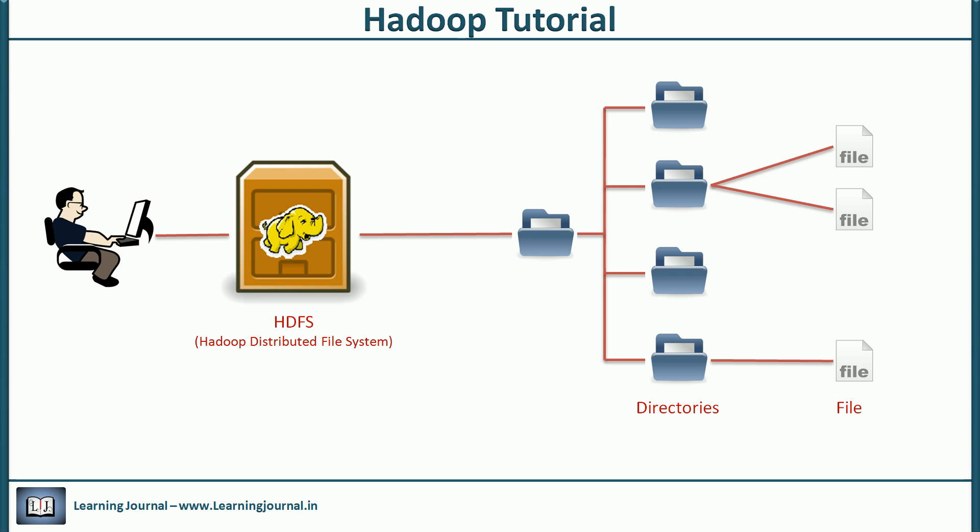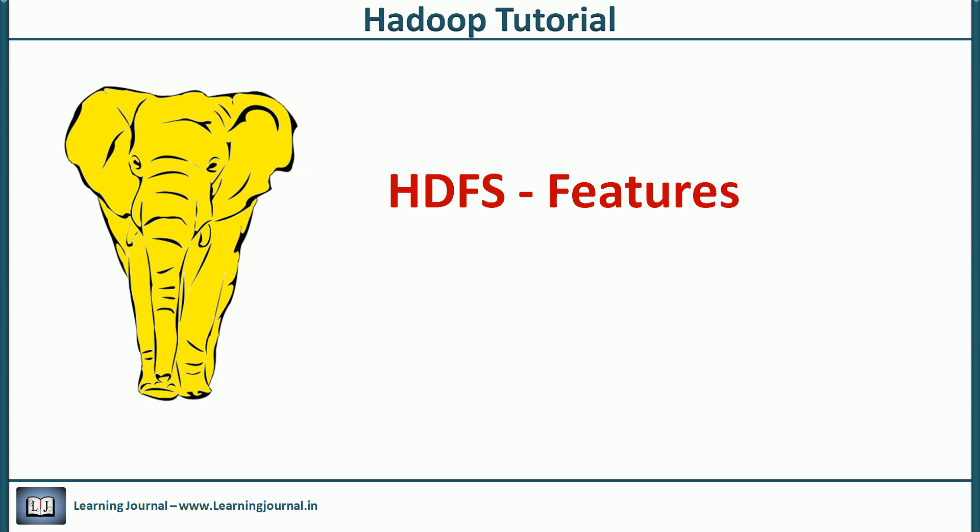I mean, every operating system comes with a default File System. Well, Hadoop is not an ordinary File System. The creators of Hadoop designed it with some special capabilities and features that make it unique. So, what are those features?